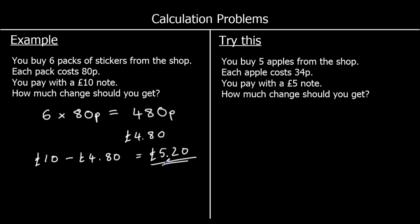You buy five apples from the shop. Each apple costs 34p. You pay with a £5 note. How much change should you get? So we've got five apples for 34p each, so we're doing five times 34p. We can use our written method.